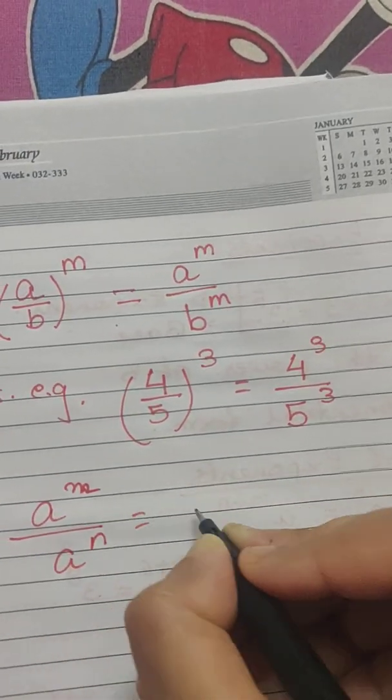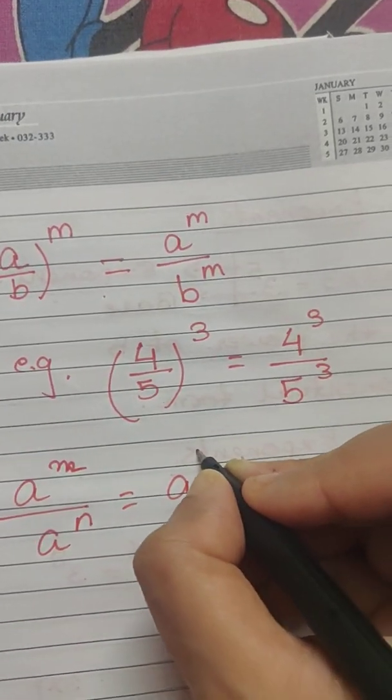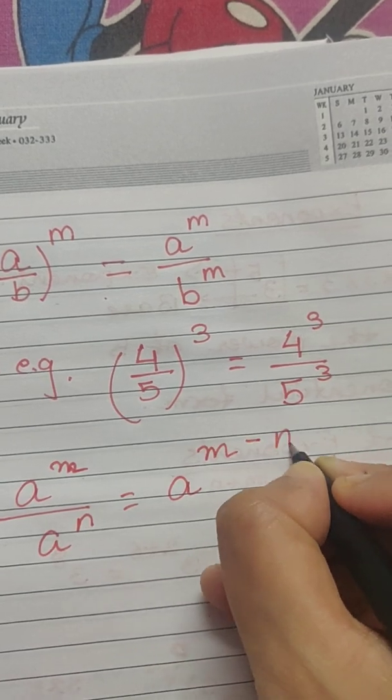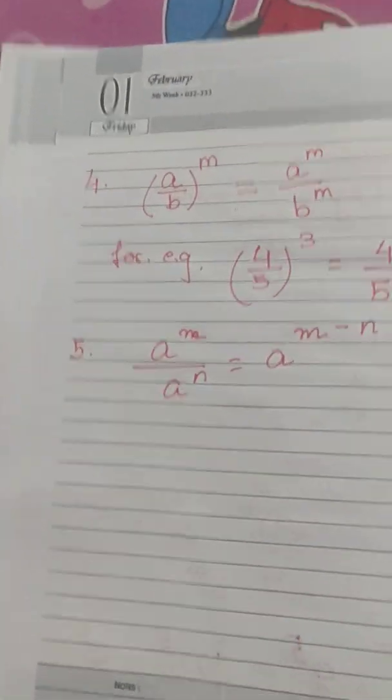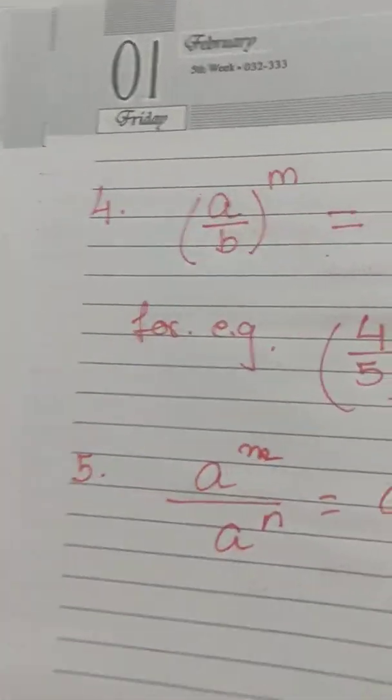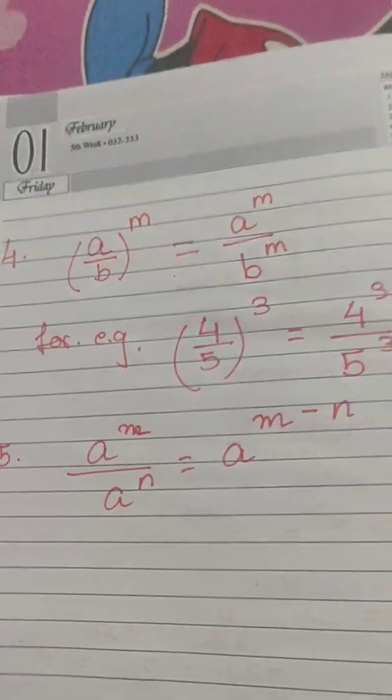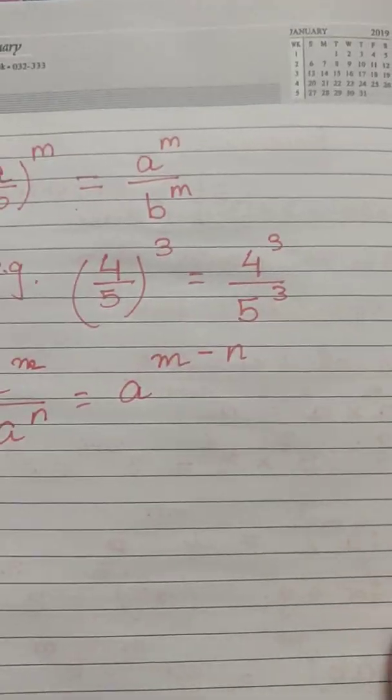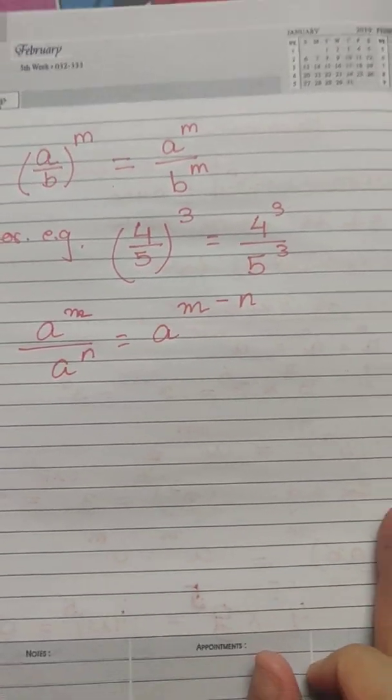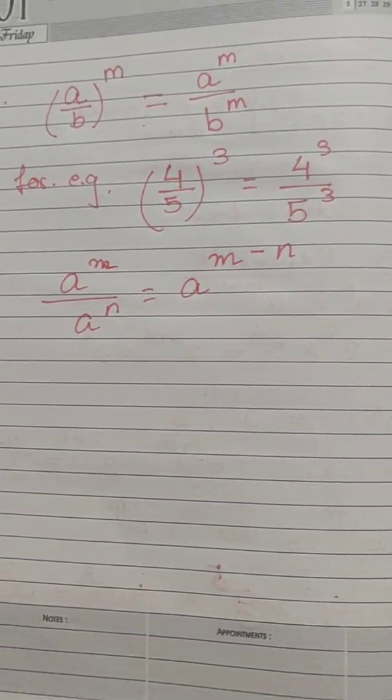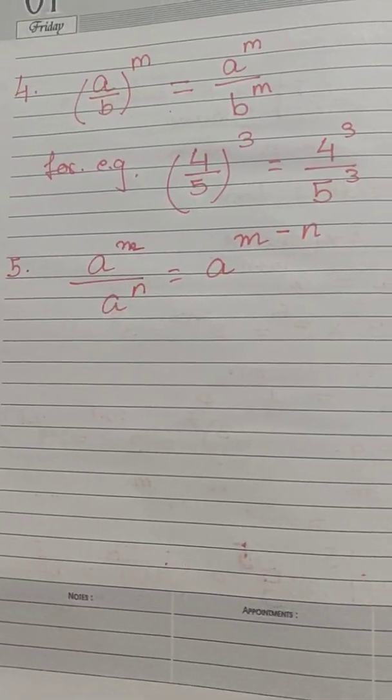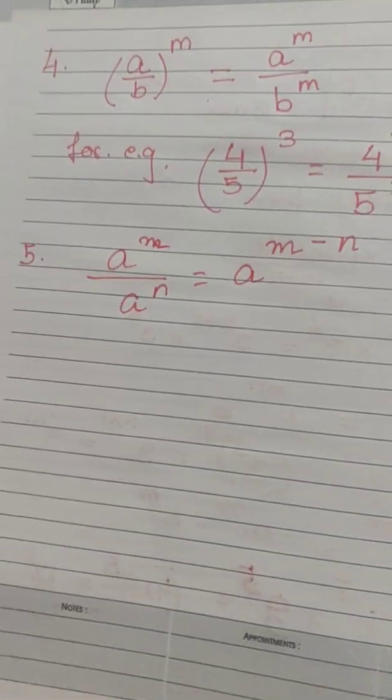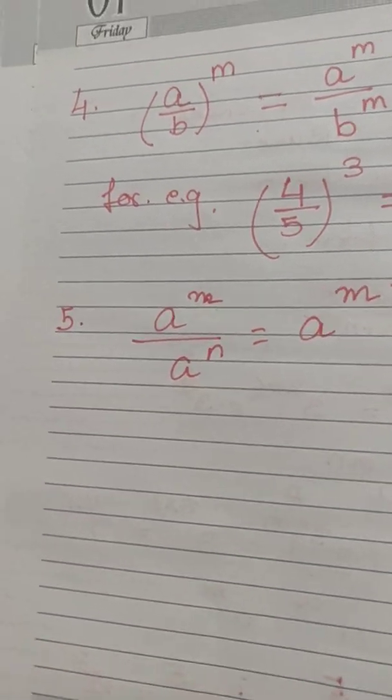Law number 5 states that a to the power m by a to the power n is equal to a to the power m minus n. Here if you notice it has resemblance to the very first law where the bases were same. In this case again the base is same but the exponents are different. The only difference with the first law is that we are dividing here whereas in case of the first law we were multiplying.